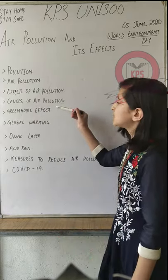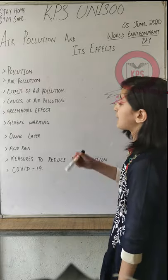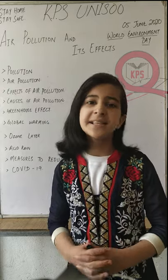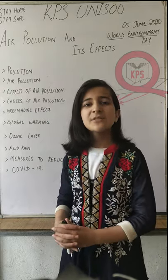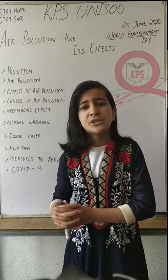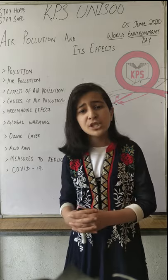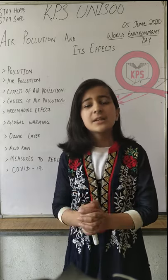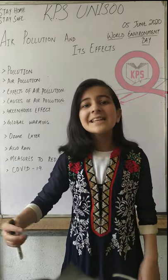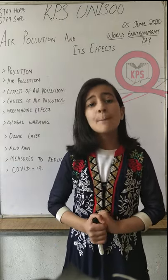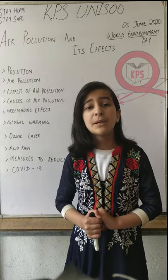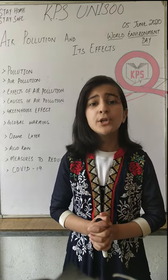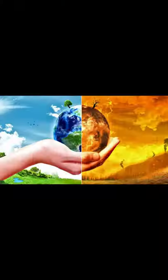Now we will discuss about global warming. Human activities are increasing the greenhouse effect. Cars, buses, and factories burn fossil fuels such as petrol, diesel, or coal. Burning fossil fuels releases carbon dioxide, which increases greenhouse gases in the air. An increase in greenhouse gases means more heat being trapped and Earth becoming warmer than normal. This unusually rapid warming of the Earth due to an increase in greenhouse gases is called global warming.